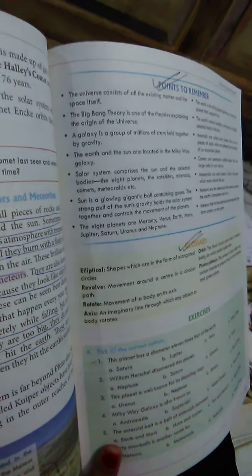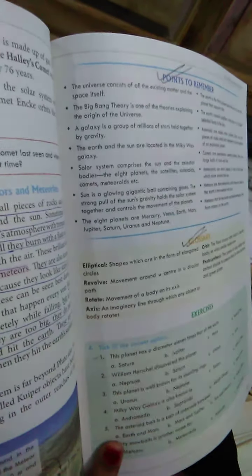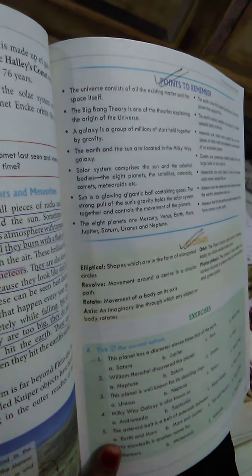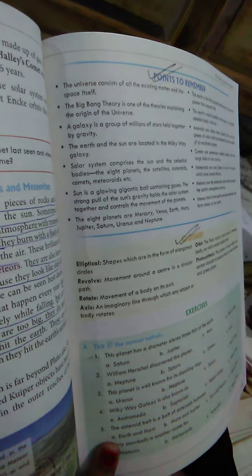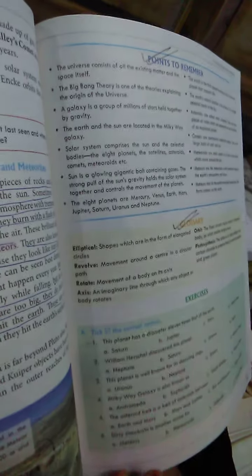Solar system comprises the Sun and the celestial bodies, i.e. the 8 planets, the satellites, asteroids, comets and meteoroids.